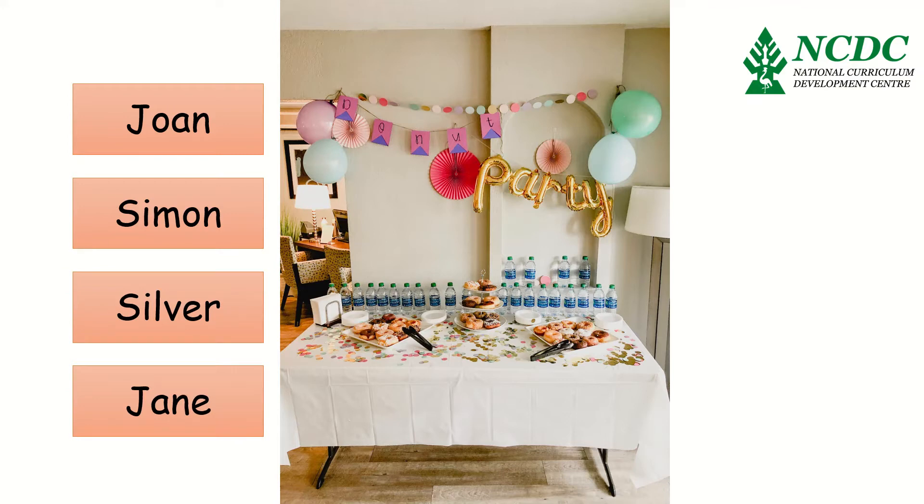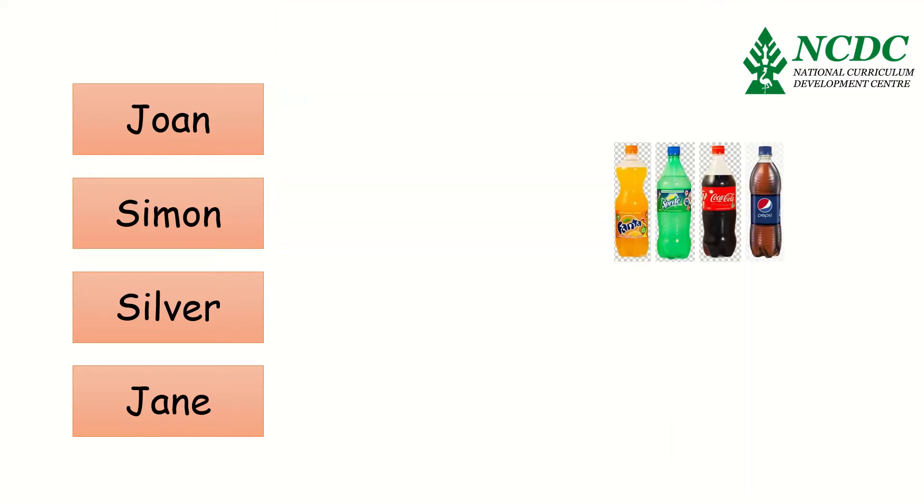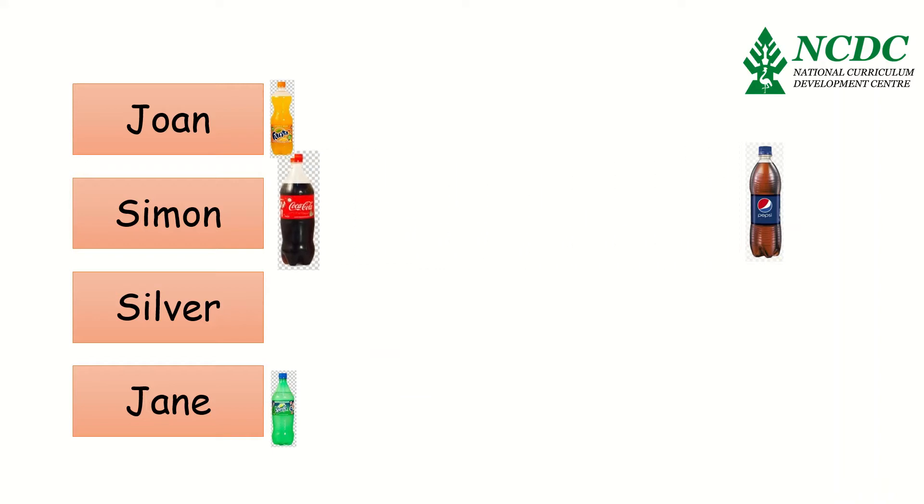At the party, they were given a chance to choose the drinks they would have loved to take. Joan chose a Fanta, Jane chose a Sprite, Simon chose a Coke, and Silva chose a Pepsi. This already is a set of information that is showing how the different party goers related with the choice of drinks at the party.